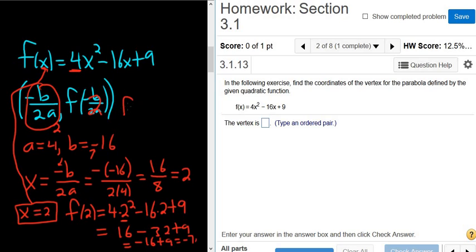Wow, scary. So f of 2 is equal to minus 7. So the ordered pair here is 2 comma negative 7. Negative 7 is this number here. So that's our vertex.